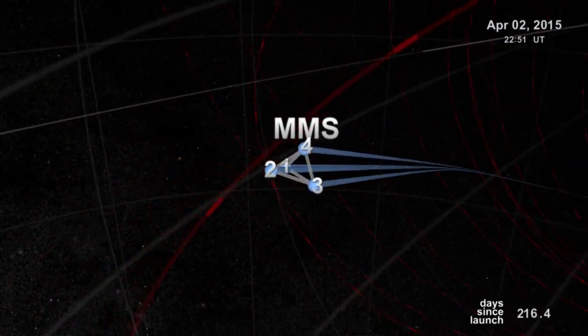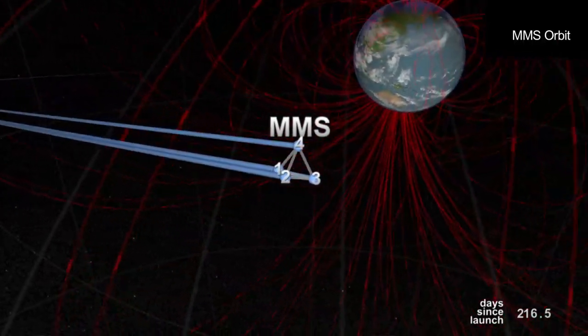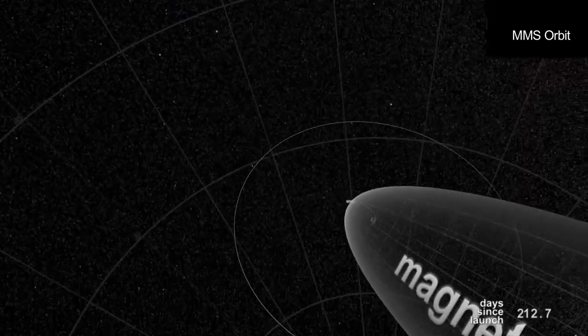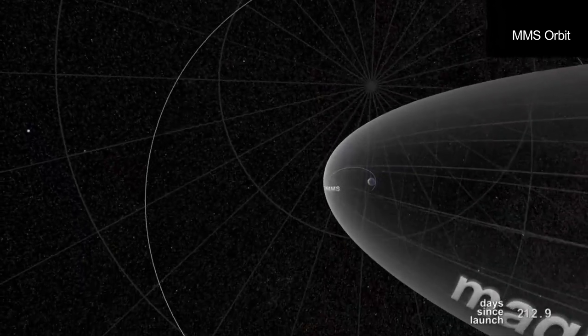The ideal situation is that we would like the four spacecraft to kind of be surrounding this region where the explosion is happening. So the separation of the spacecraft is about 10 to 100 kilometers, which may seem like a long distance, but in terms of the magnetosphere which is absolutely huge, this is really a microscopic region that we're trying to cover.